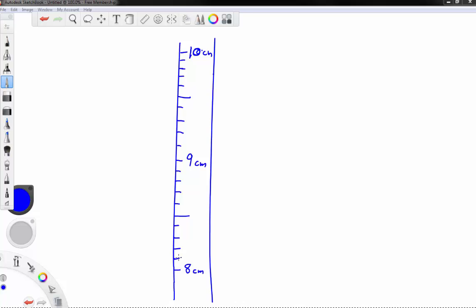So this would be 8 centimeters plus 1 millimeter or 8.1 centimeters, 8.2, 8.3, 8.4. Usually the half marks are a little longer, so 8.5, et cetera. And 9.1, 9.2, 9.3, 9.4, 9.5, on up to 9.9, and then 10.